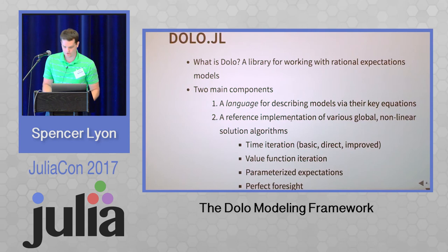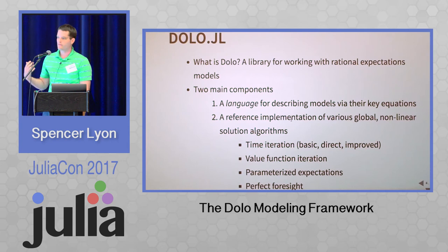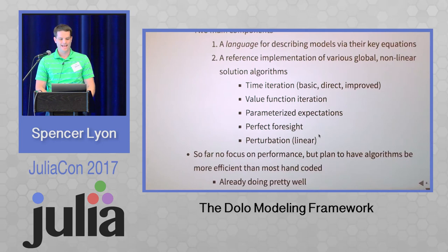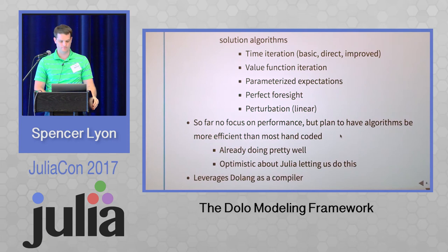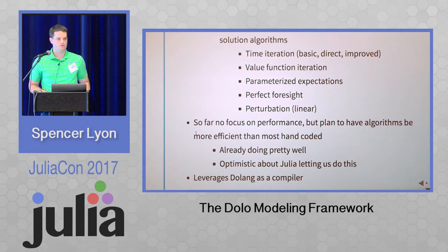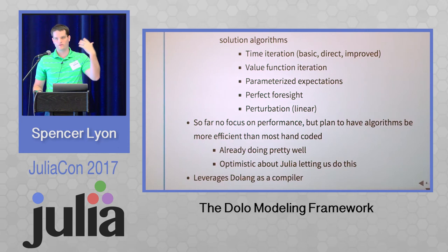So what is dolo.jl? It's a library for working with rational expectations models. There are two main components: a language for describing models via their key equations and groups of variables or parameters, and a reference implementation of various global nonlinear solution algorithms. It leverages DoLang as its compiler. We haven't focused on performance yet, but a naive implementation of these algorithms will likely be slower than what we already have. We plan to make these algorithms more efficient than most handwritten code — there's plenty of optimization we haven't yet tried.